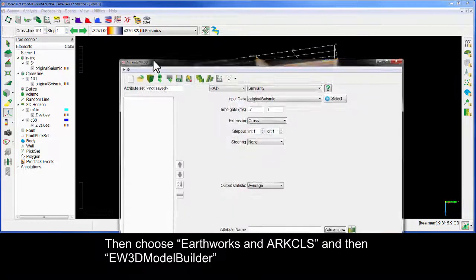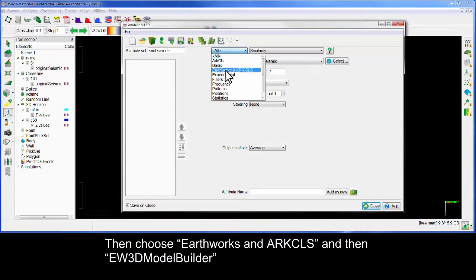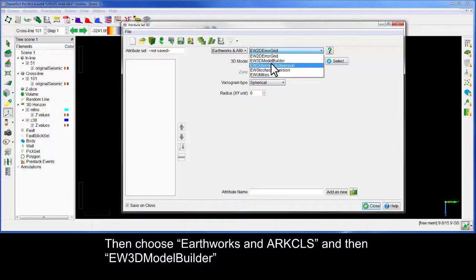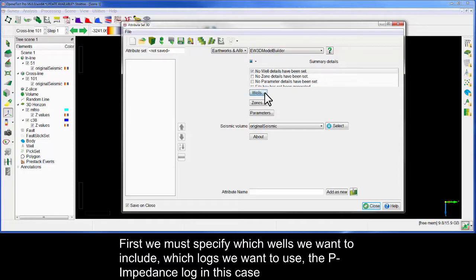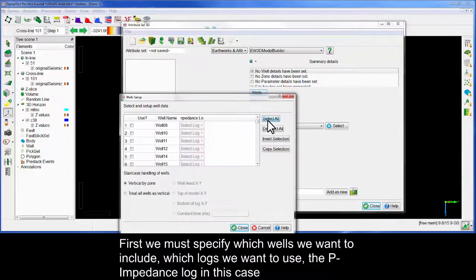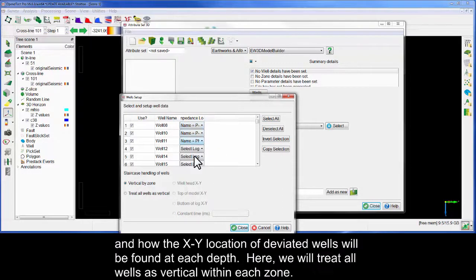Then choose Earthworks and ArcCLS, and then EW3D Model Builder. First, we must specify which wells we want to include, which logs we want to use, the p-impedance log in this case, and how the xy location of deviated wells will be found at each depth.